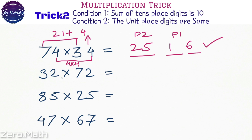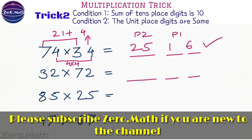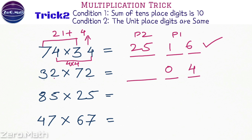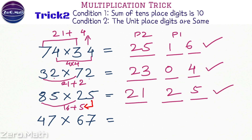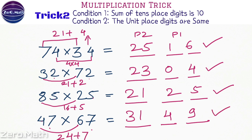Let us solve the second example. Part 1: 2 into 2 is 04 — always in two-digit form. Part 2: 7 into 3 is 21, plus 2 equals 23. So 2304 is our answer. Next: 5 into 5 is 25, and 8 into 2 is 16 plus 5, so 16 plus 5 is 21. So 2125 is our answer. And the last one: 7 into 7 is 49, and 4 into 6 is 24 plus 7, which equals 31. So 3149 is our answer.